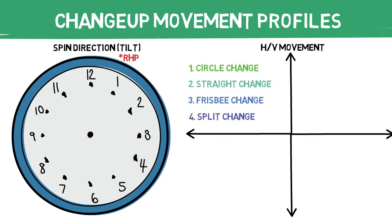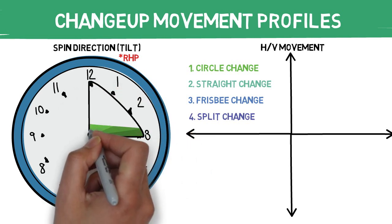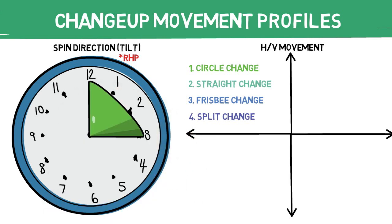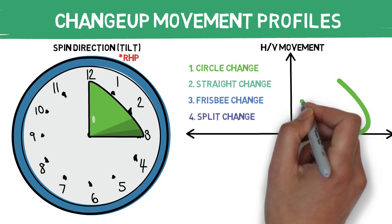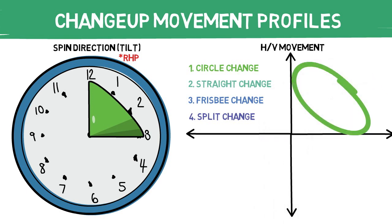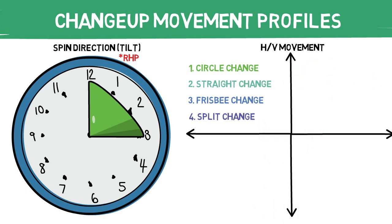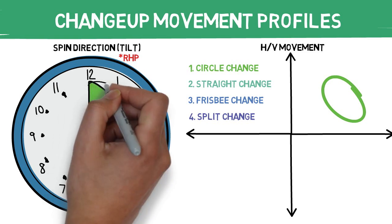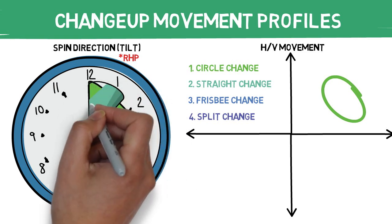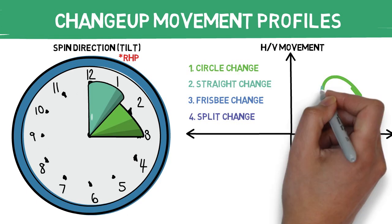The circle change is the pitch I see most frequently, and its movement profile varies more than any other pitch type, ranging from a 12 o'clock tilt all the way down to a 3 o'clock tilt, which equates to a large area on our movement plot. In my experience, the circle change performs best at a much smaller range within that area. The straight change falls between 12 o'clock and 1:30 on our tilt chart.